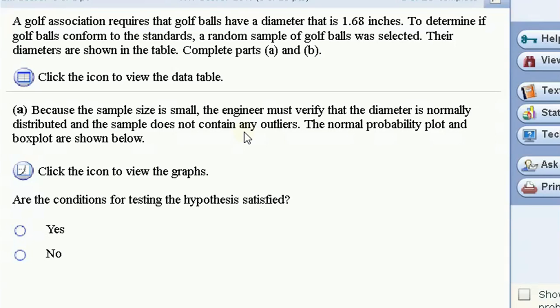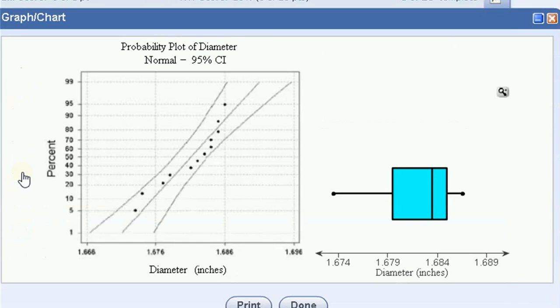Because the sample size is small, the engineer must verify that the diameter is normally distributed and the sample does not contain any outliers. The normal probability plot and box plot are shown below. Let's look at those to answer this first problem. This is a normal probability plot and a box plot.